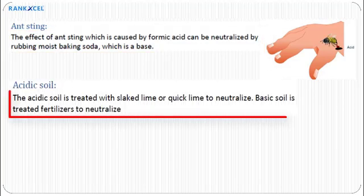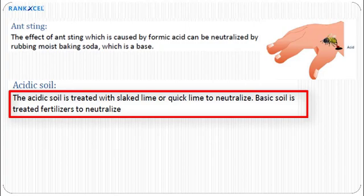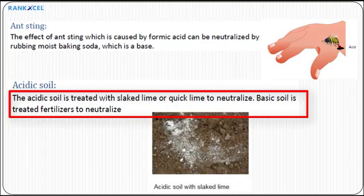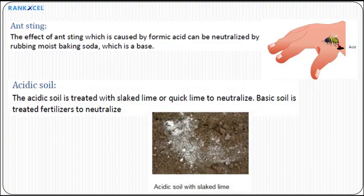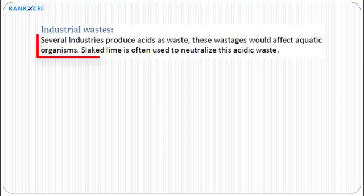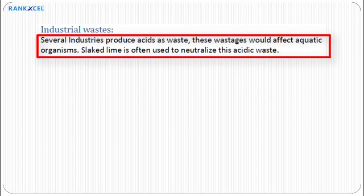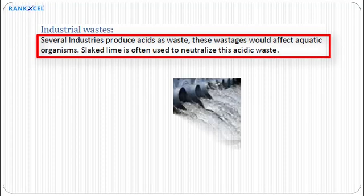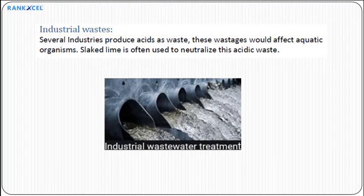Acidic soil: Acidic soil is treated with slaked lime or quicklime to neutralize it. Basic soil is treated with fertilizers to neutralize it. Industrial waste: Several industries produce acids as waste. These wastes affect aquatic organisms. Slaked lime is often used to neutralize this acidic waste.